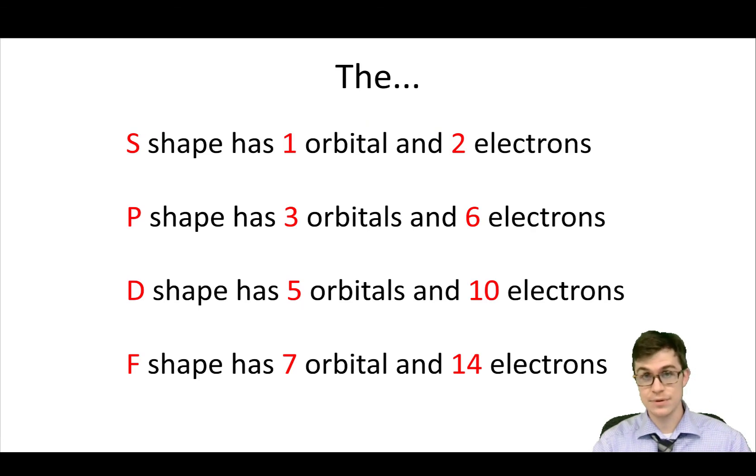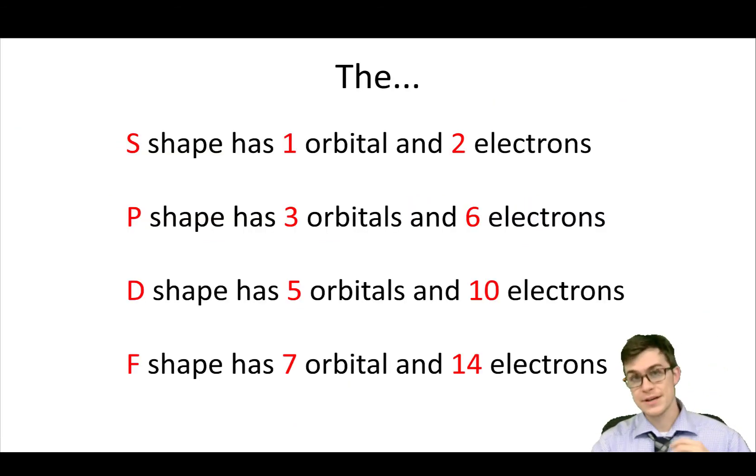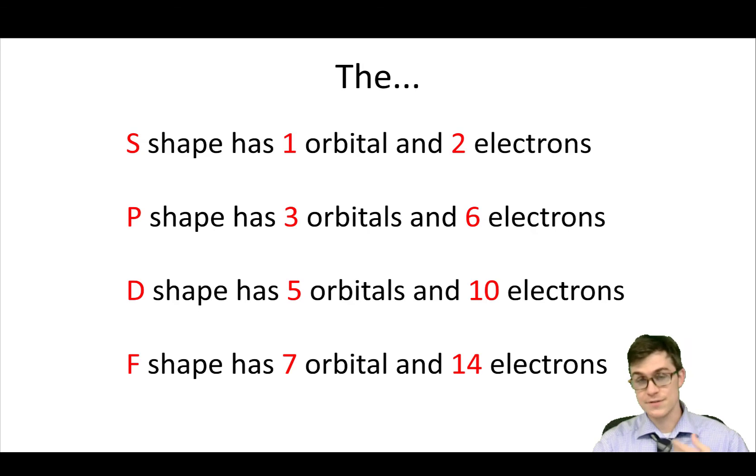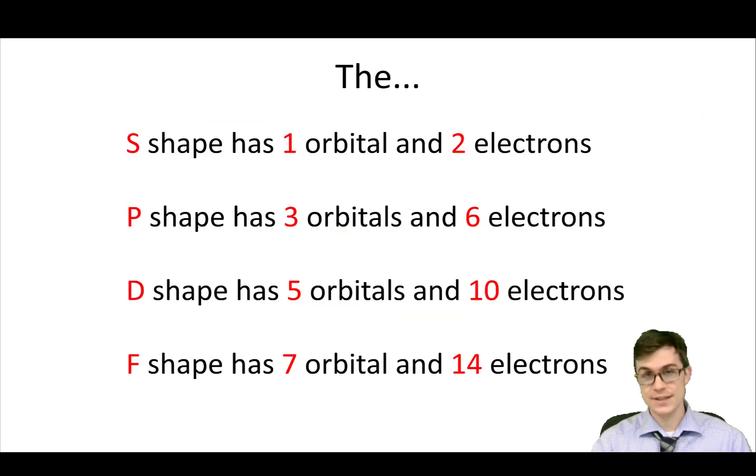Basically, the S-shape, the S-sublevel, it has one orbital and two electrons, maximum. The P-shape has three orbitals, so it can hold six electrons. The D-shape has five orbitals, and it can hold ten electrons. And the F-sublevel, the F-shape, it has seven orbitals, and it can hold 14 electrons.